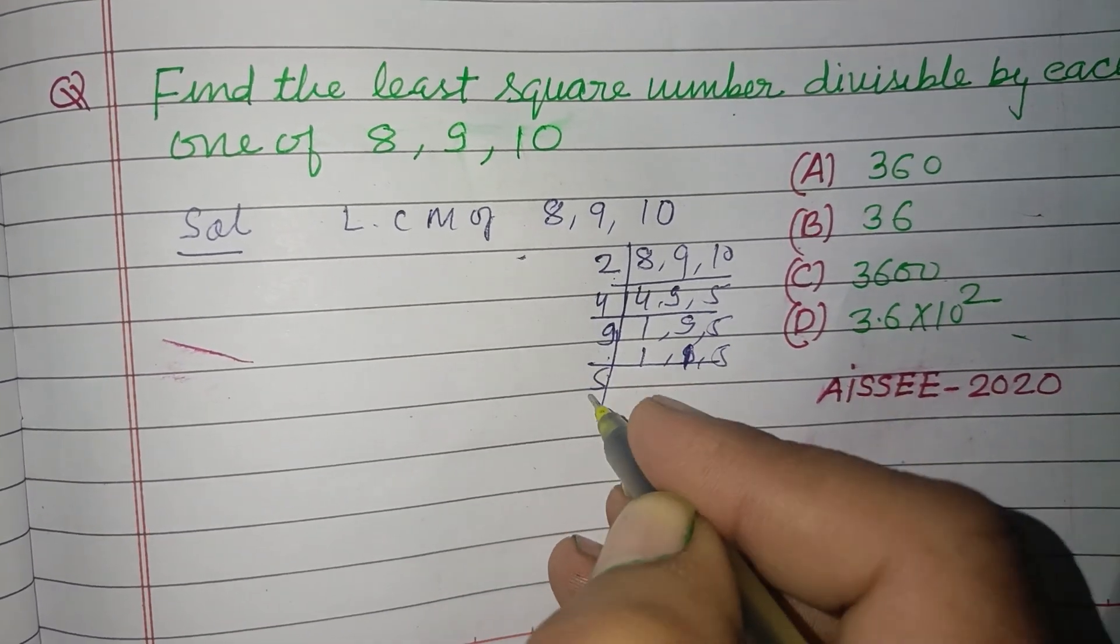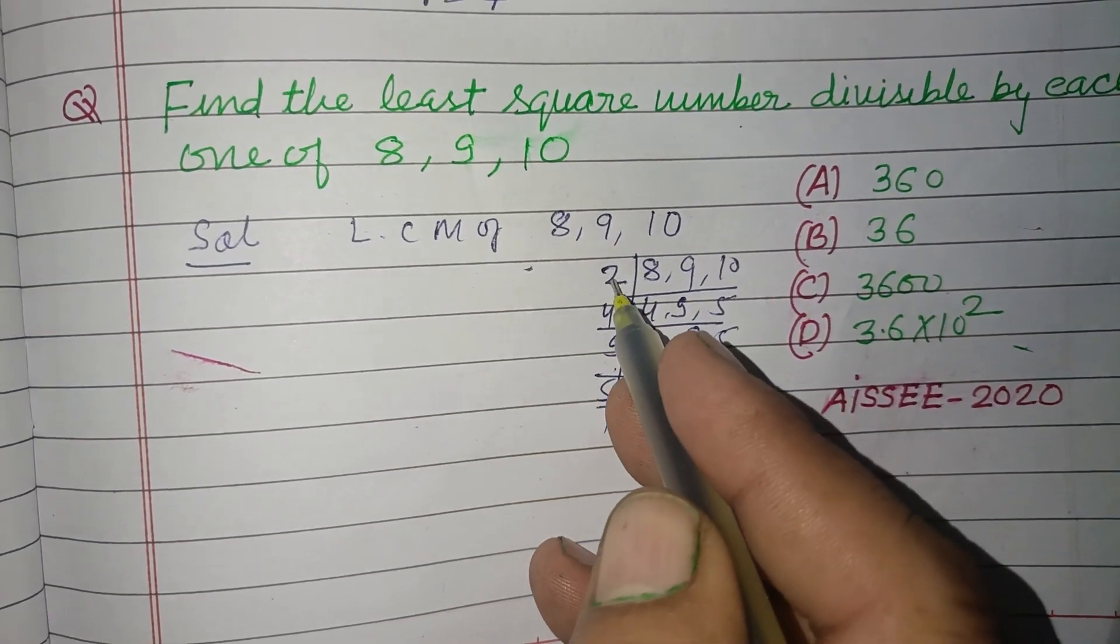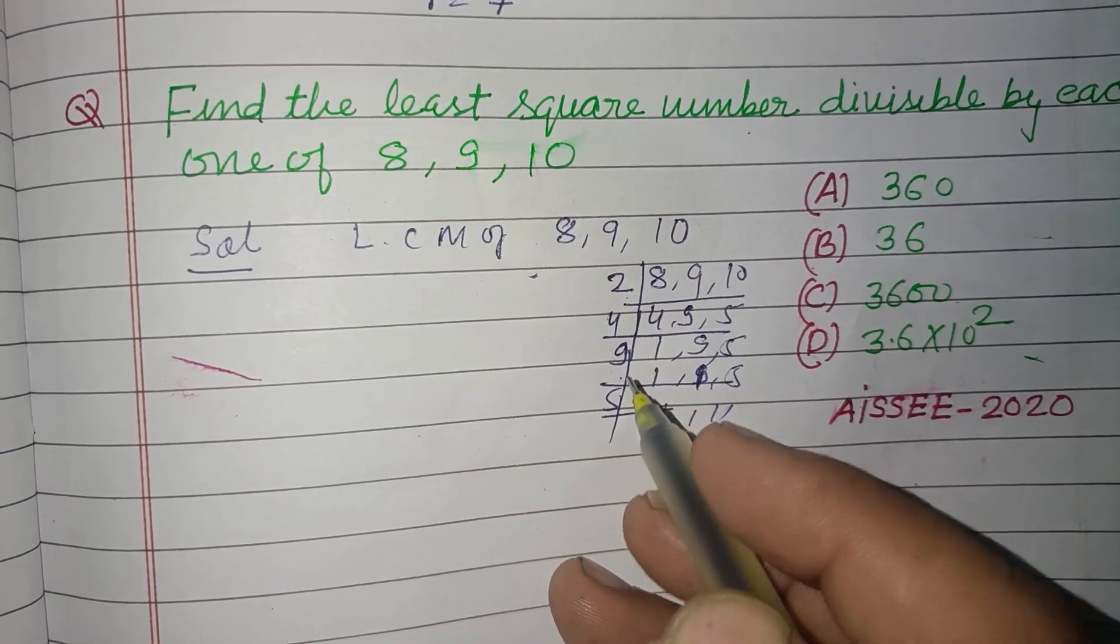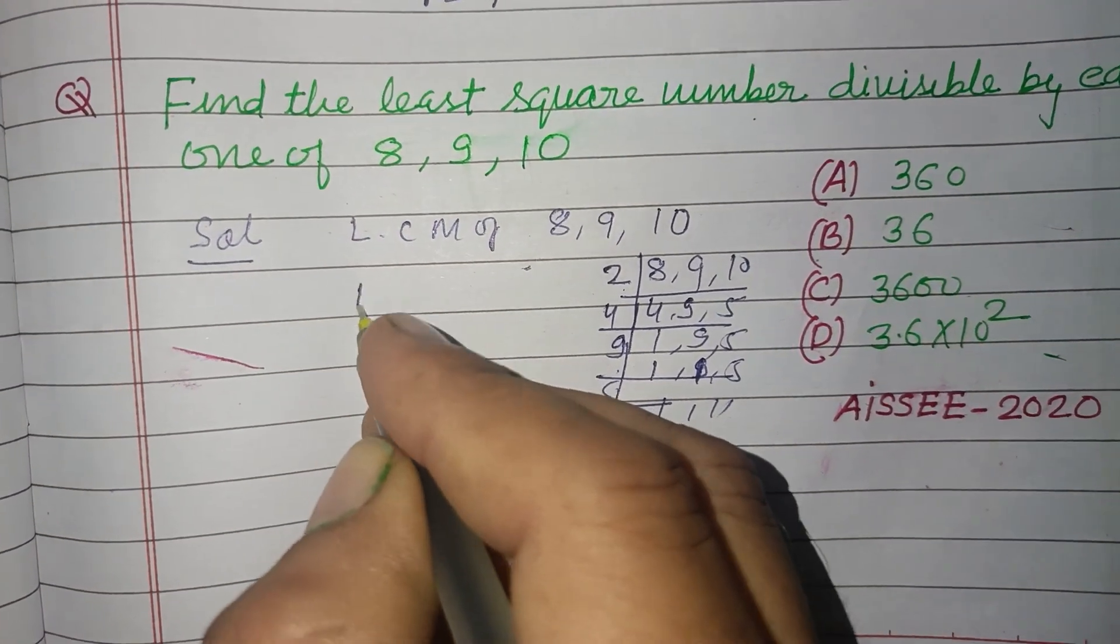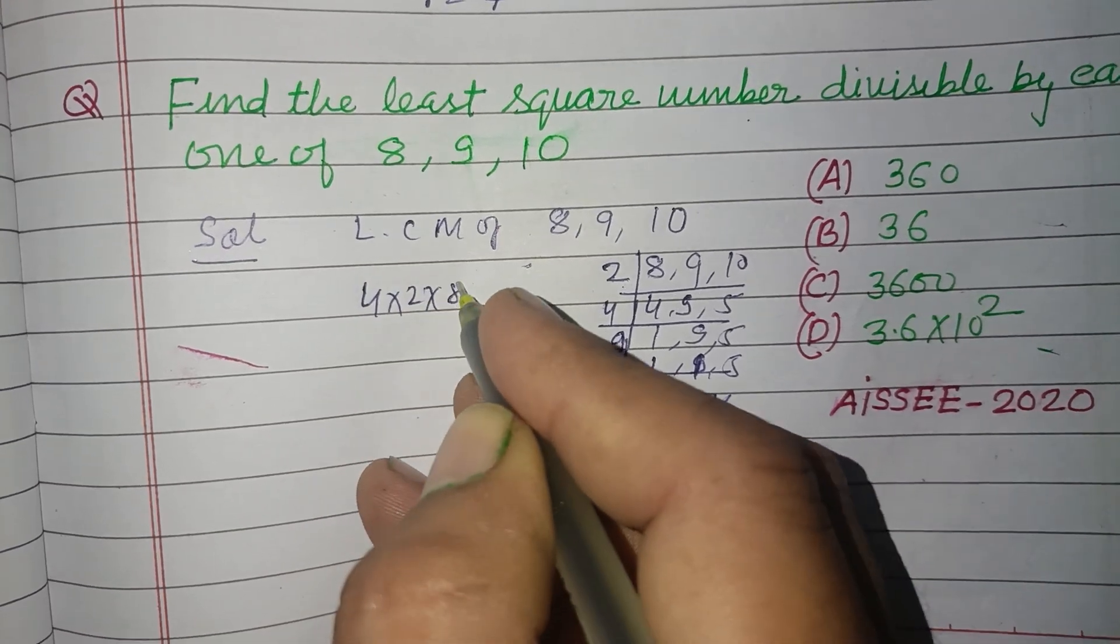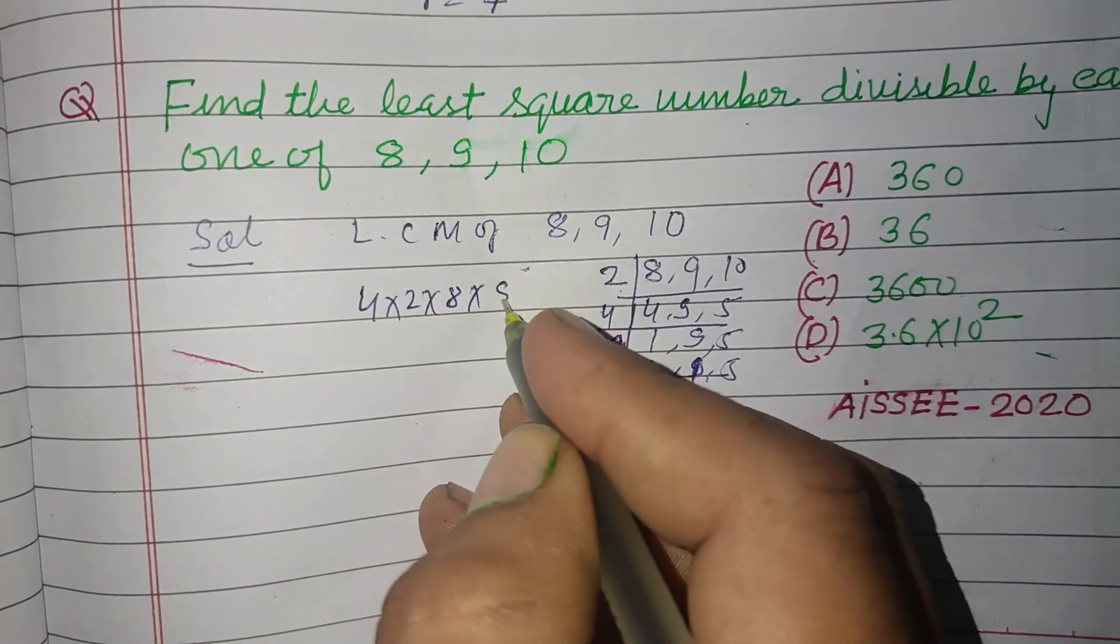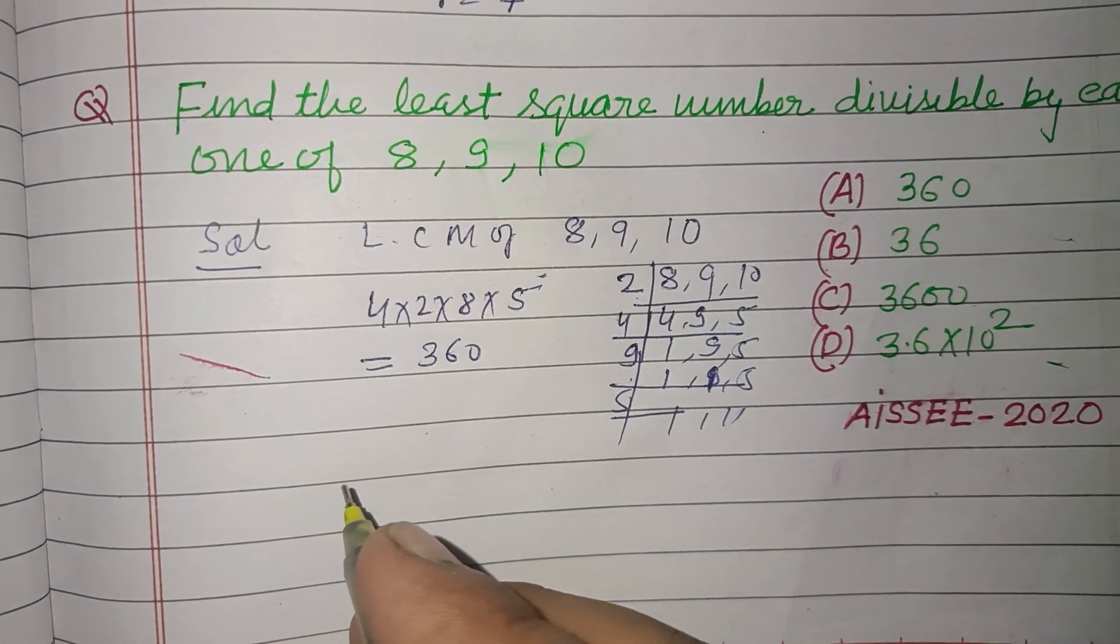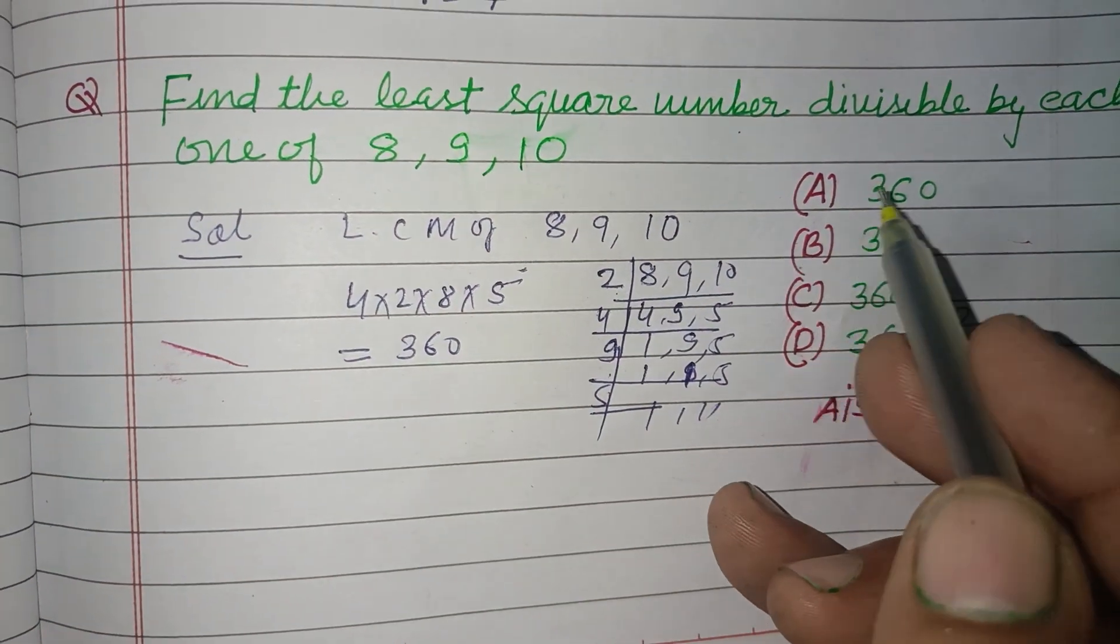Now by 5: 1, 1, 1. So 4 times 2 is 8, times 9 is 72, times 5 is 360. So 360 is the LCM. Now which number is divisible by this and is a square number?